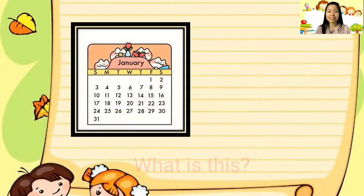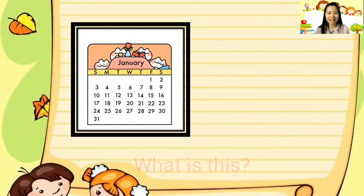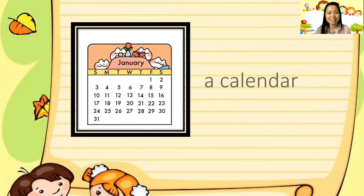What is this? This is a thing which has days, months, and year. Do you know? Yes, it's a calendar. Can you say 'a calendar'? Yes, it's a calendar. Very good.